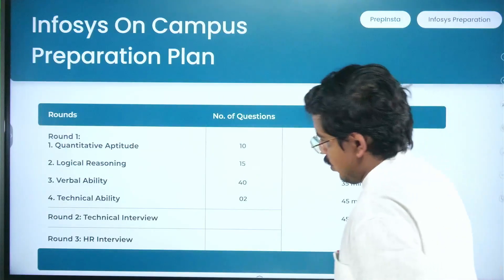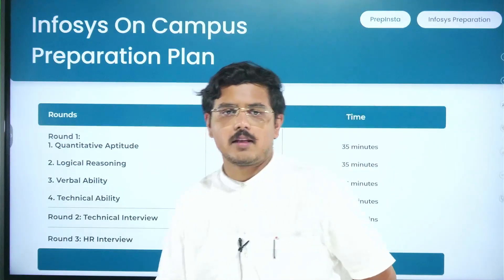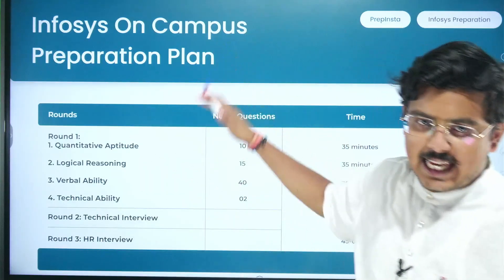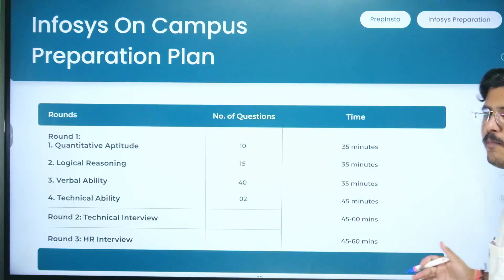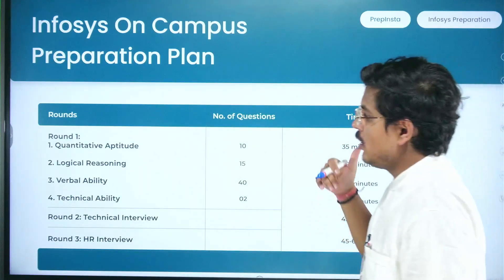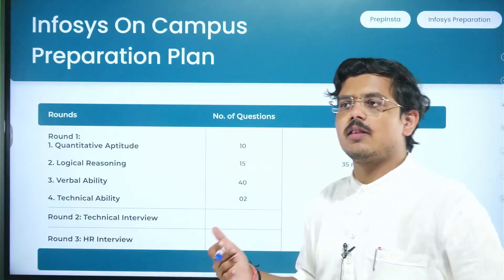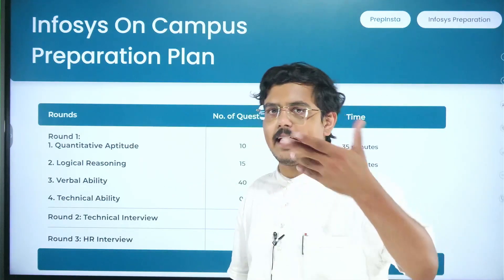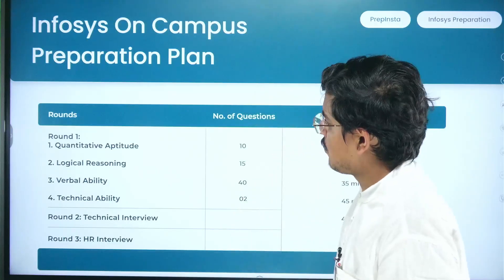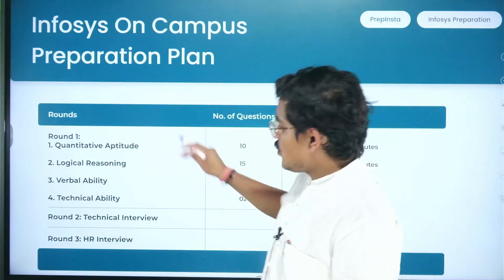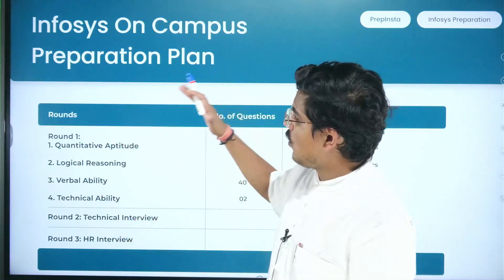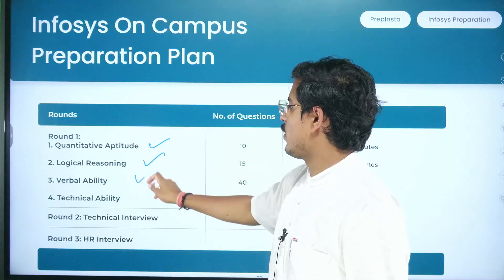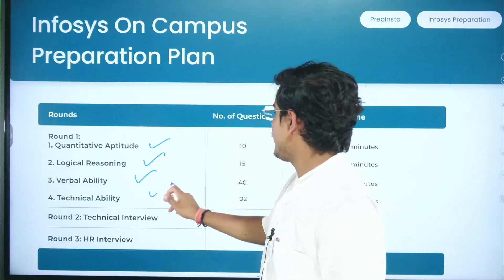Before I explain things to you, as I always do, I'll explain the skeleton in which questions are generally asked and the rounds that happen. Generally it has three rounds: in round one you have quantitative aptitude, logical reasoning, verbal ability, and technical ability.